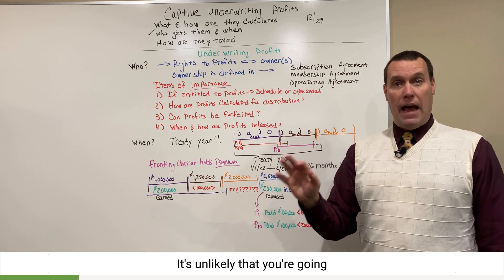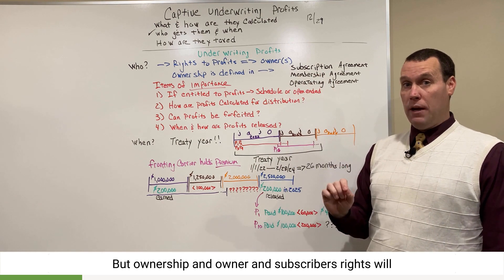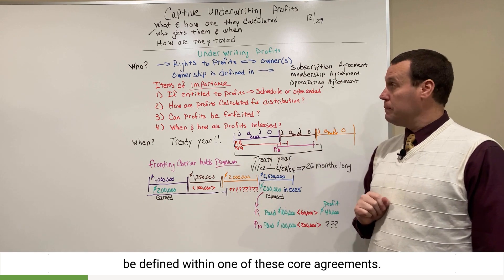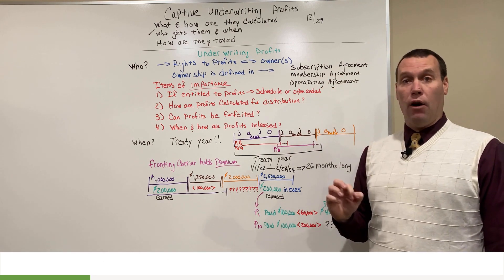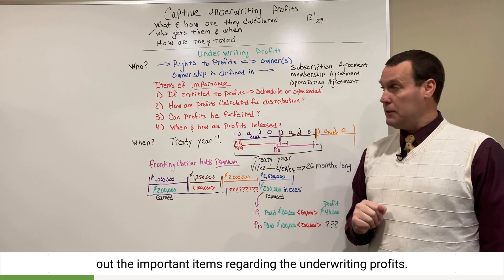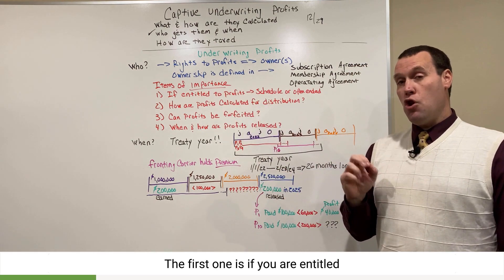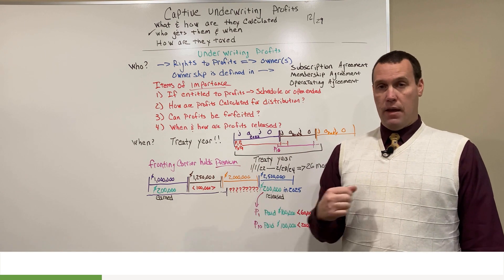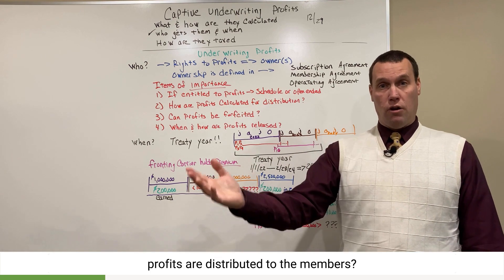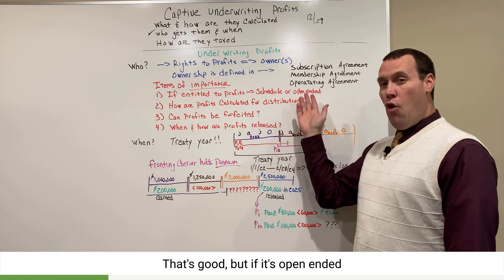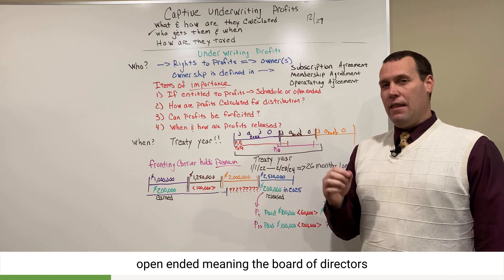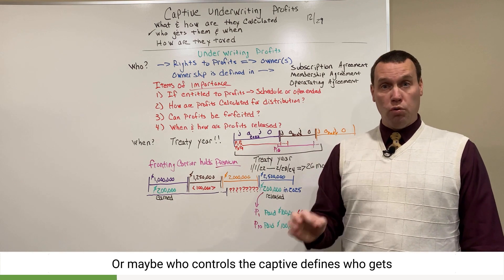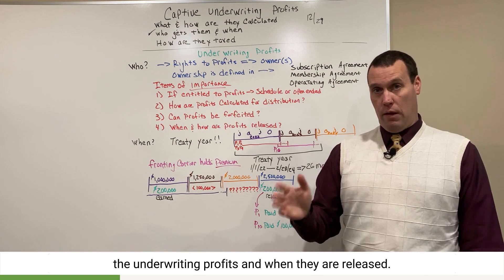You may not have all three agreements — it's unlikely. You may only have one or two, but ownership and subscriber rights will be defined within one of these core agreements. Within these agreements you've got to look at the important items regarding underwriting profits. The first one is: if you are entitled to the underwriting profits, what does that look like? Is it a schedule? Is it 100% of earned underwriting profits distributed to members? That's good. But if it's open-ended — meaning the board of directors decides how much and when to release — or whoever controls the captive defines who gets the profits and when they are released, you should stay away from that open-ended arrangement.